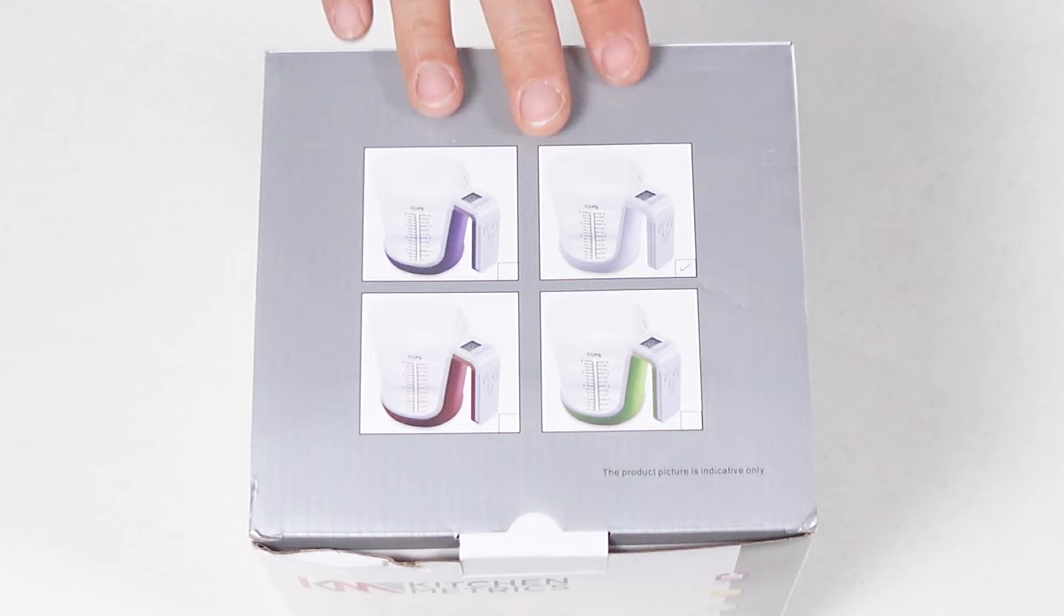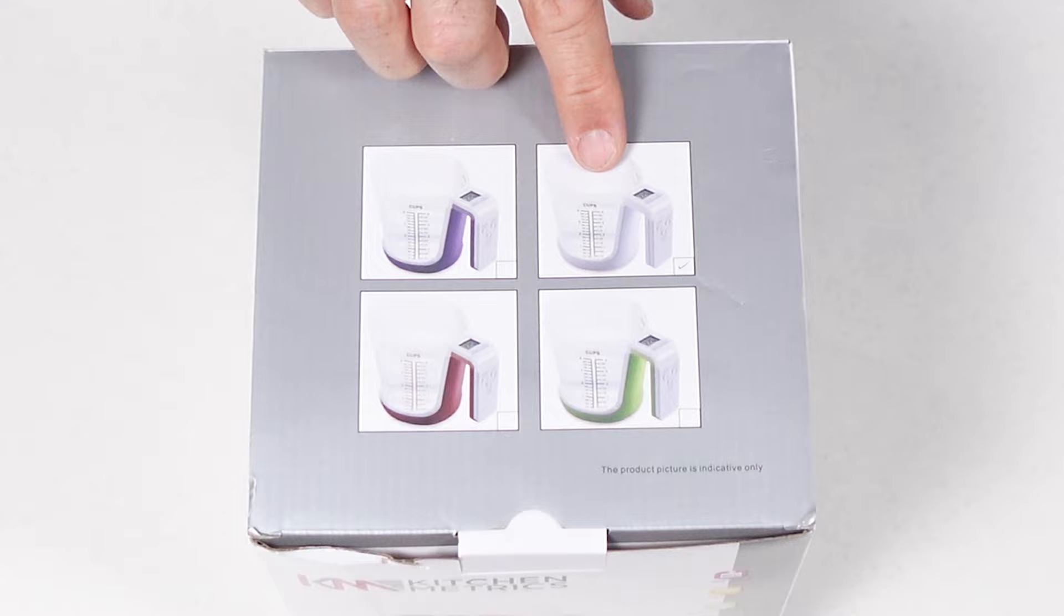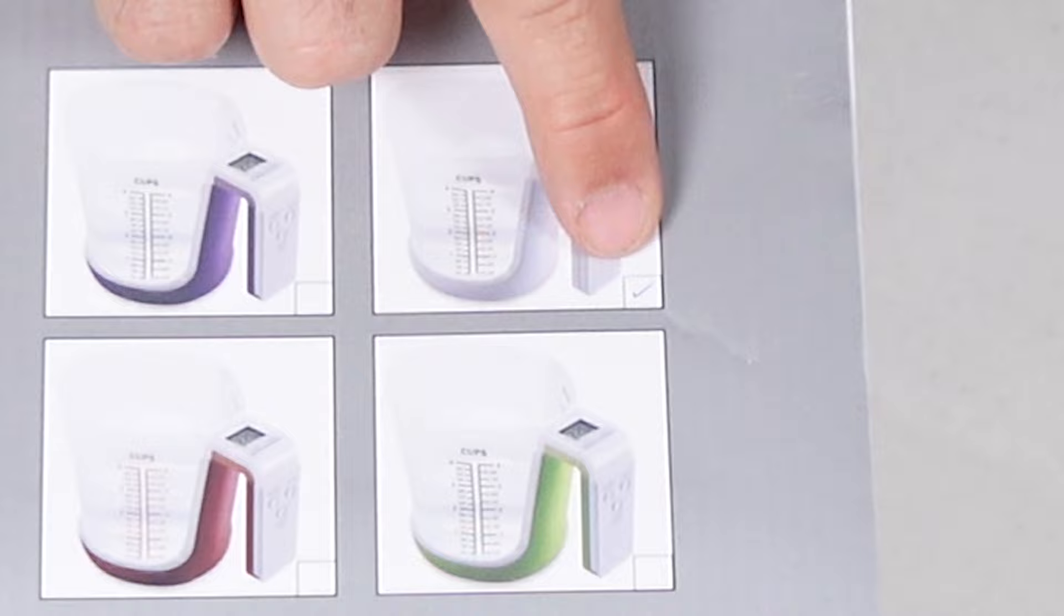Here's the four colors this comes in. We got the green, we got the white or gray, we got purple and looks like a burgundy. There's the check mark right there so we must be getting this one. Let's open this thing up.